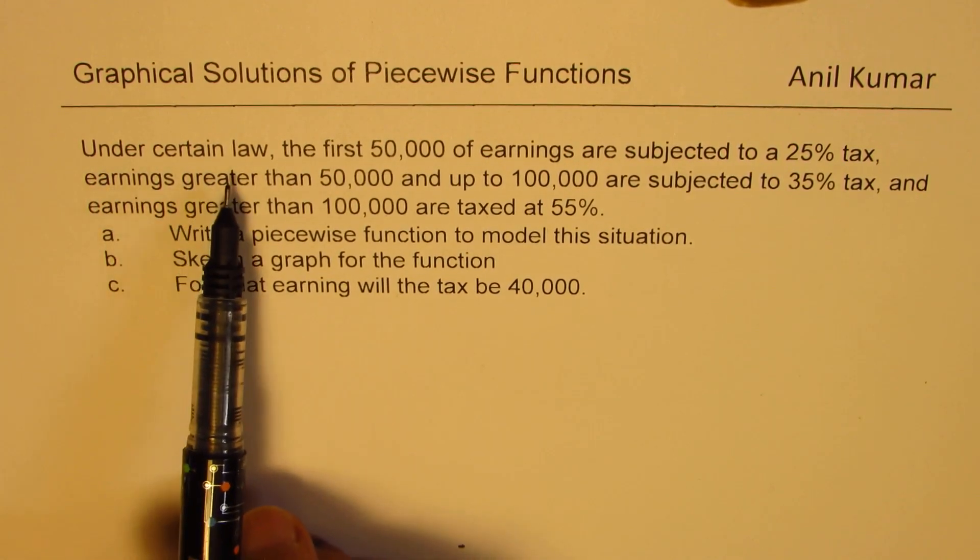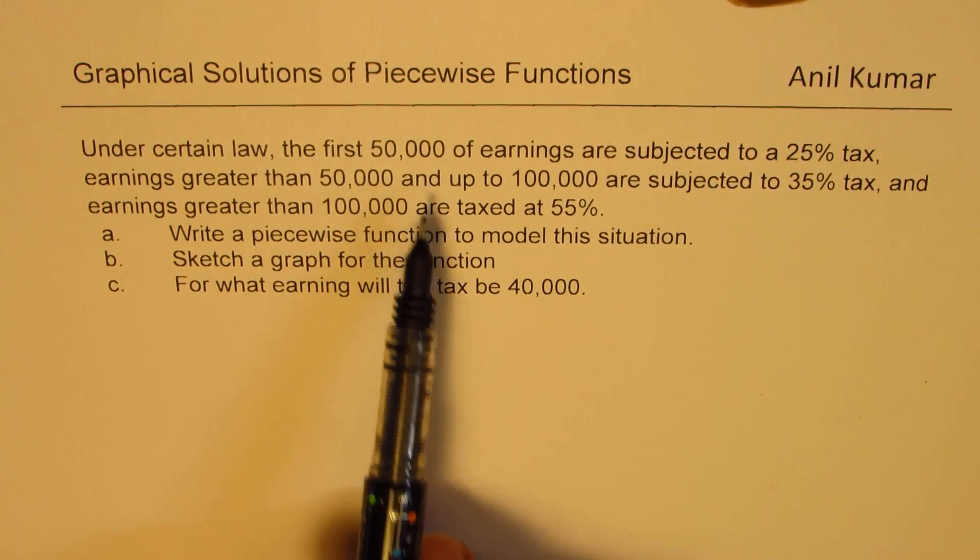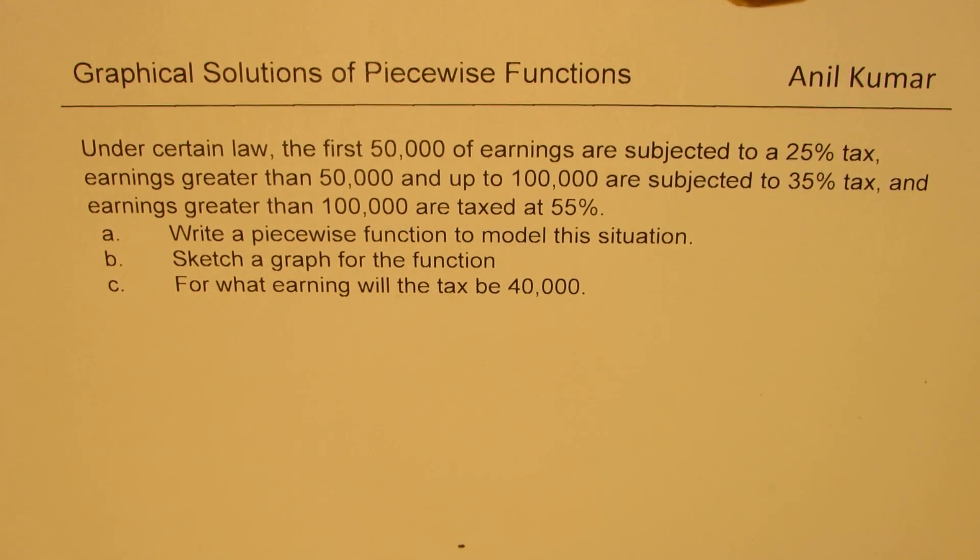We have a very important piecewise function which will calculate the tax rate from earnings. Under a certain law, the first 50,000 of earnings are subjected to a 25% tax. Earnings greater than 50,000 but up to 100,000 are subjected to 35% tax. And earnings greater than 100,000 are taxed at 55%.